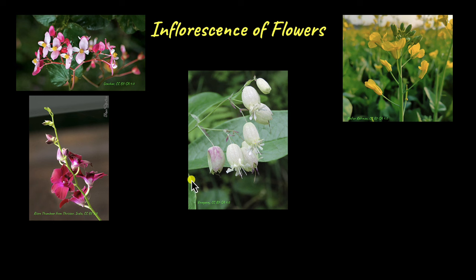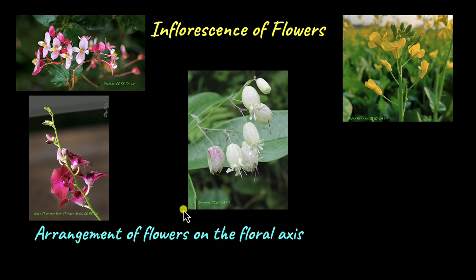So let's understand the pattern of floral arrangement. First off, what is a flower? A flower is the structure in angiosperms that houses the reproductive structures of the plant. It is formed when the shoot apical meristem becomes the floral meristem. The arrangement of flowers on the floral axis is called inflorescence. The floral axis is the part of the flower on which the reproductive structures and the other ancillary parts of the flower are attached.